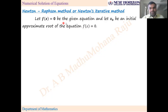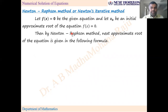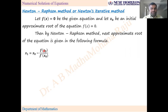Let f(x) = 0 be the given equation, and let x₀ be an initial approximate root of the equation f(x) = 0. Then by Newton-Raphson method, the next approximate root of the equation is given by the formula: x₁ = x₀ - f(x₀)/f'(x₀), x₂ = x₁ - f(x₁)/f'(x₁).